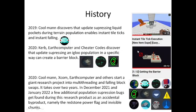In 2020, another population suppression bug was found: you can generate barrier blocks if you update suppress an igloo population in such a way that a tile entity gets replaced by a different tile entity. You can also watch that video. The topic of this video will be additional update suppression bugs in terrain population which were found during falling block research. In 2020, Kuhlman, XCOM, Earth Computer and a few others started a giant research project in falling block swaps, and as a byproduct of this research project, we now have even more population suppression bugs — namely the redstone power flag and invisible chunks.